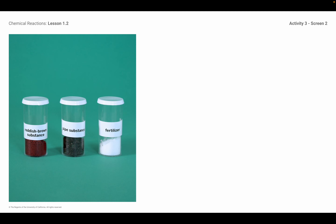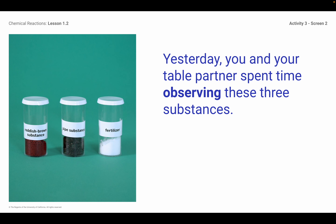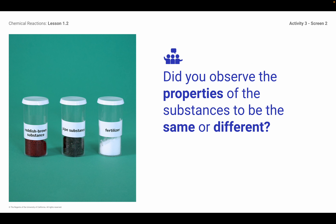The kids looked yesterday at these three different substances, and we talked at length about how they could be observed — like what were some character traits. We talked about how the pipe substance was certain grains, and then compared that to the fertilizer grains and the reddish-brown substance. You're just going to have to come into class and take a look at these things. I can't really talk about them — I want you to actually make these observations.